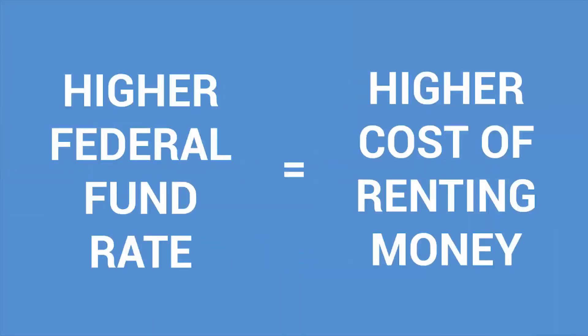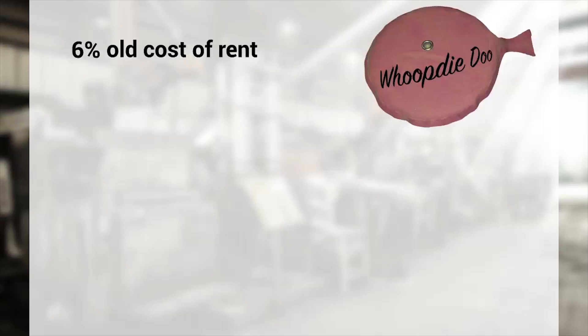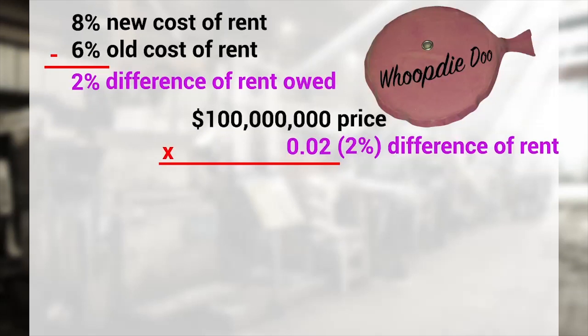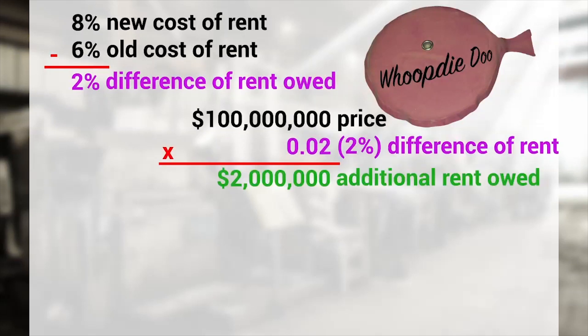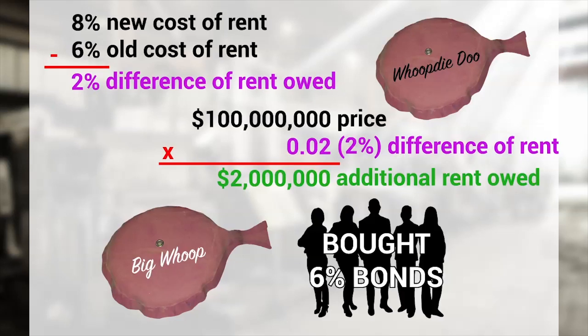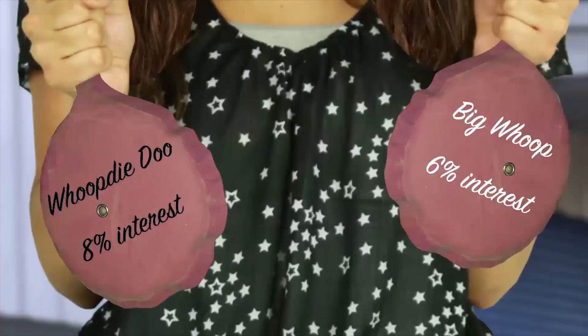So back to Whoop-dee-doo paper. With the federal funds rate hikes, the cost of renting money is more expensive. The company thought they could get away with paying 6% rent on the money they wanted to spend on their whoopie stamping factory, but now the cost of renting that money is 8%, and those 2 percentage points are a big deal on $100 million — $2 million a year is meaningful to a company with a volatile product. So now think about it from the perspective of all the people who bought 6% corporate bonds of similar risk and duration as the ones Whoop-dee-doo was going to sell — apples-to-apples in all respects except the interest rate.